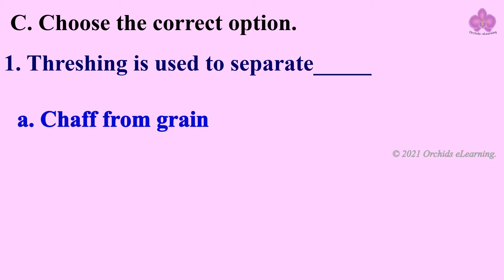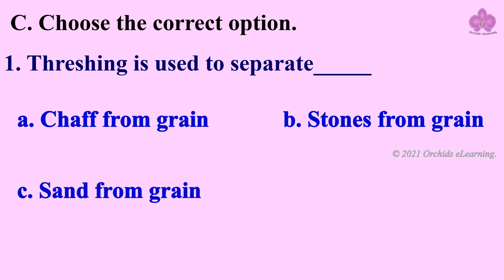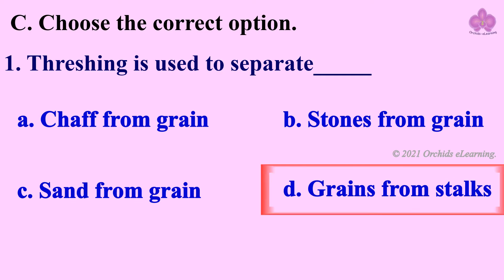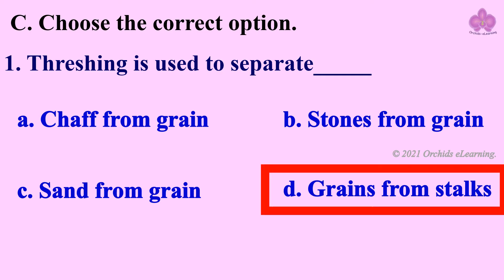Choose the correct option: Threshing is used to separate — chaff from grain, stones from grain, sand from grain, or grains from stalks? Answer: grains from stalks.